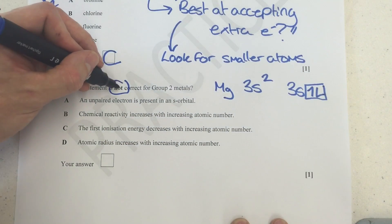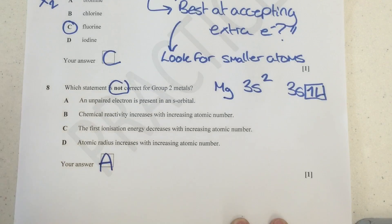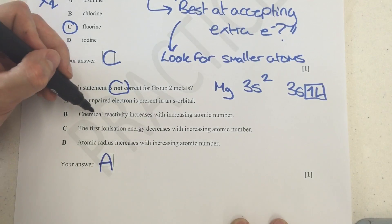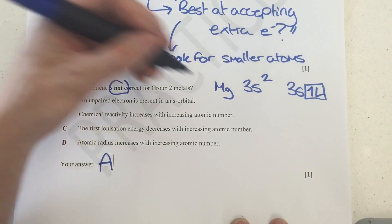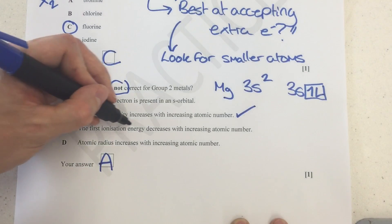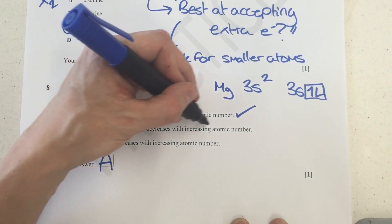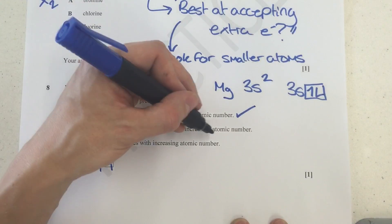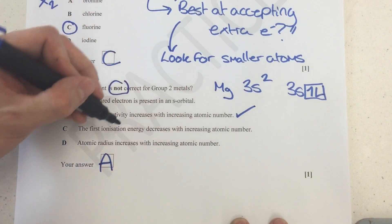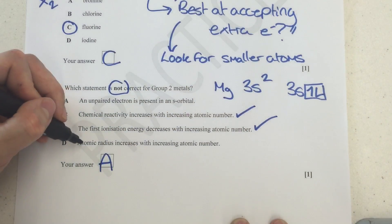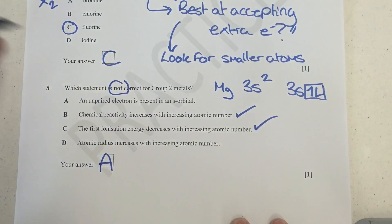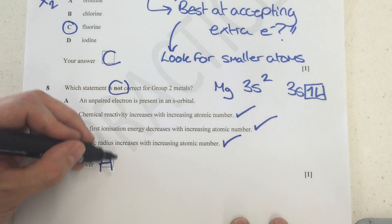So this has got to be the incorrect statement. So the answer is going to be A. But let's just point out these here. Chemical reactivity increases with increasing atomic number. That is actually true. Barium is more reactive. So we can say that's true. The first ionization energy decreases with increasing atomic number. That's true. Because barium, which has got the largest atomic number of the ones we consider, has got the smallest first ionization energy because it's got a really big atomic radius and it's subjected to more shielding. So that's correct. Atomic radius increases with increasing atomic number. I've already described that anyway. Barium is the biggest, fattest atom of that group that we consider. So it's got to be here, A.